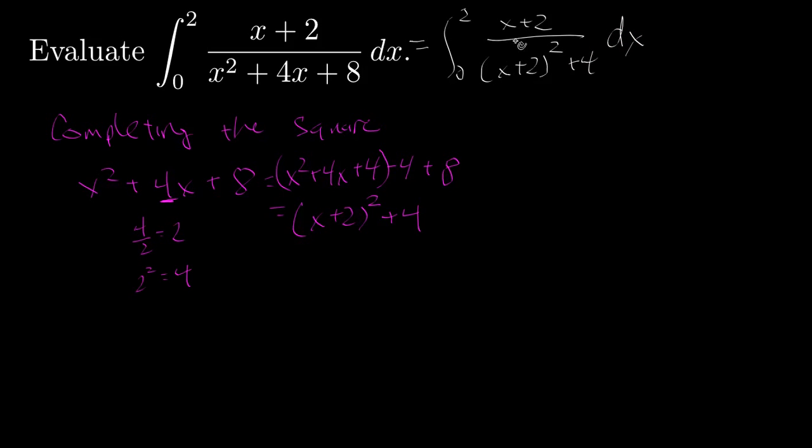And this suggests a substitution. We'll let u equal x plus 2, and so we get a new integral. And now this is still a definite integral, so we have to change the limits of integration. When x equals 0, then u is 2. And then when x is 2, u is equal to 2 plus 2. So top limit of integration is 4.